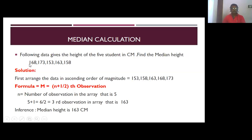The heights are 168, 173, 153, 163, and 158. The solution is to first arrange the data in ascending order of magnitude. The ascending order is 153, 158, 163, 168, and 173.